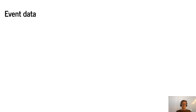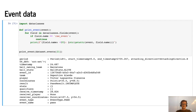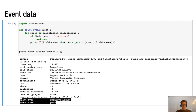Now let's have a look at the event data itself. If we look at just a random event from the dataset and print all the data it contains, it will look like this. Each event contains a period, a timestamp, ball owning team if the ball stays alive, some more information about the team and the player, and also the coordinates. More interesting things are the type of the event and also the result. This is part of the event dataset returned by Kloppy.